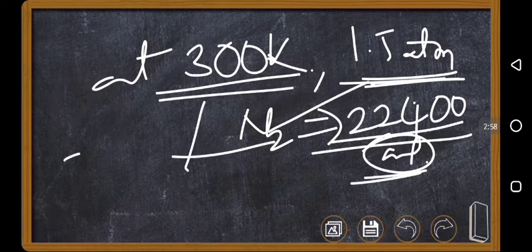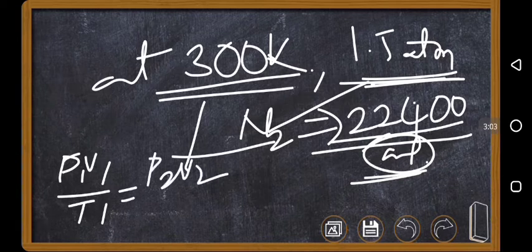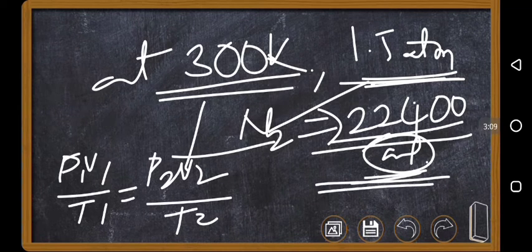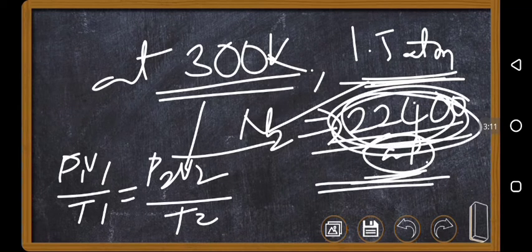The given conditions are not STP conditions. So, what you have to do is, P1 V1 by T1 equals P2 V2 by T2, by applying this formula. You will get the volume of nitrogen gas at STP conditions. Now, this is not the volume that to be taken.